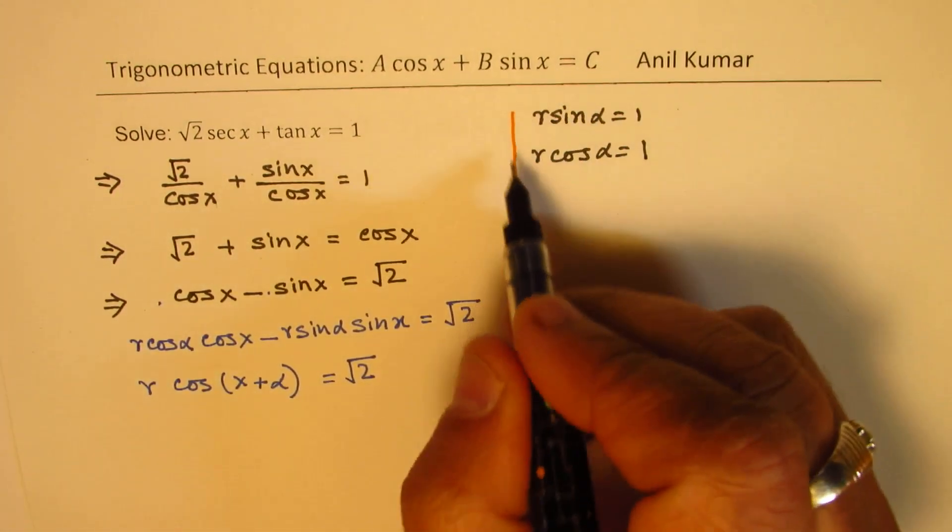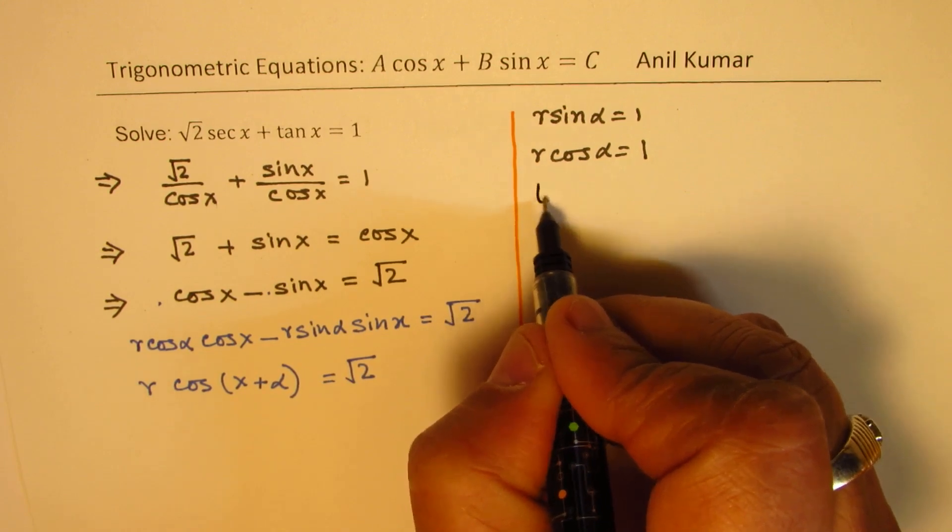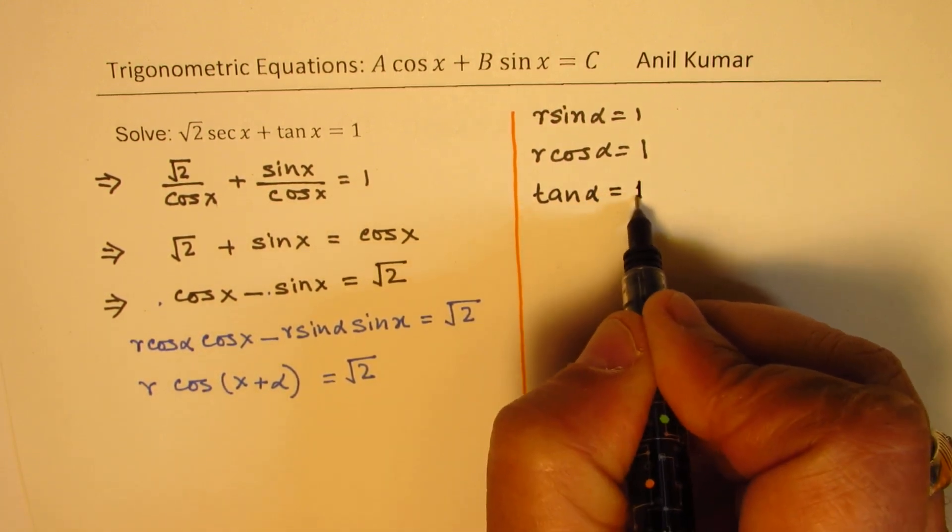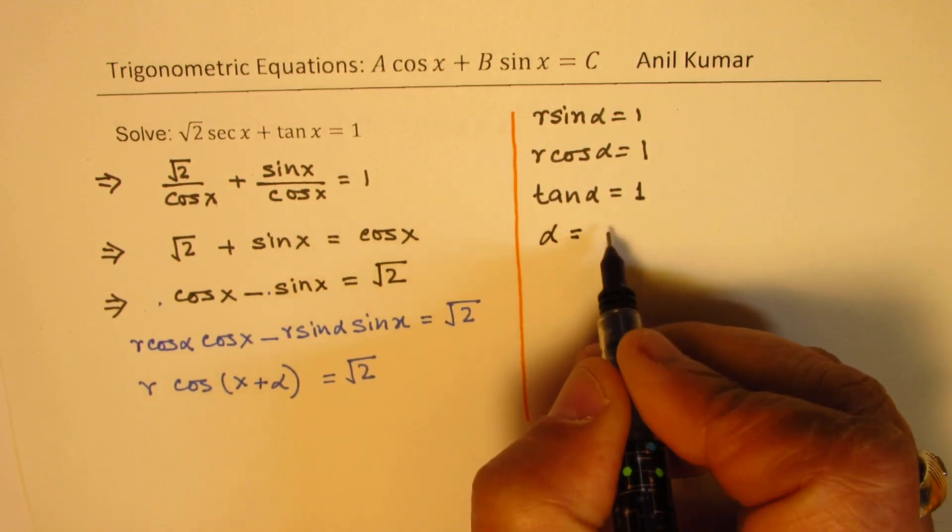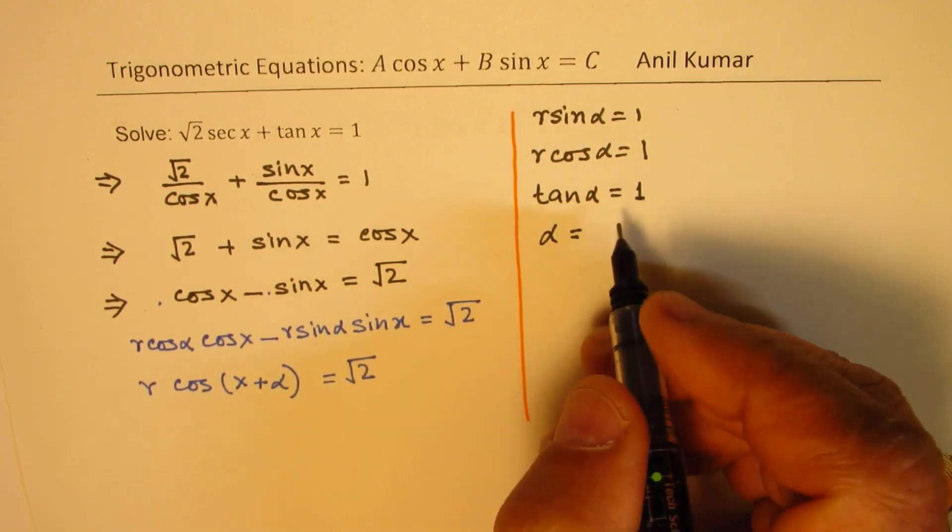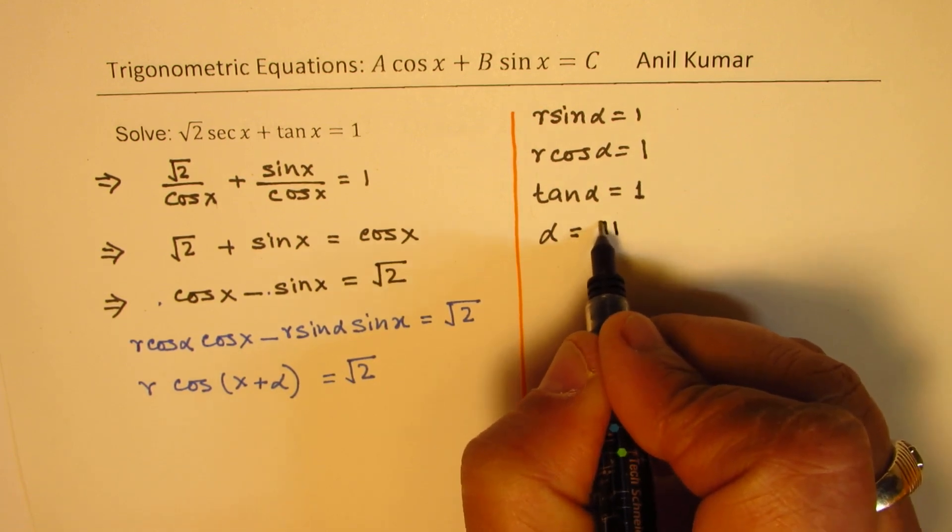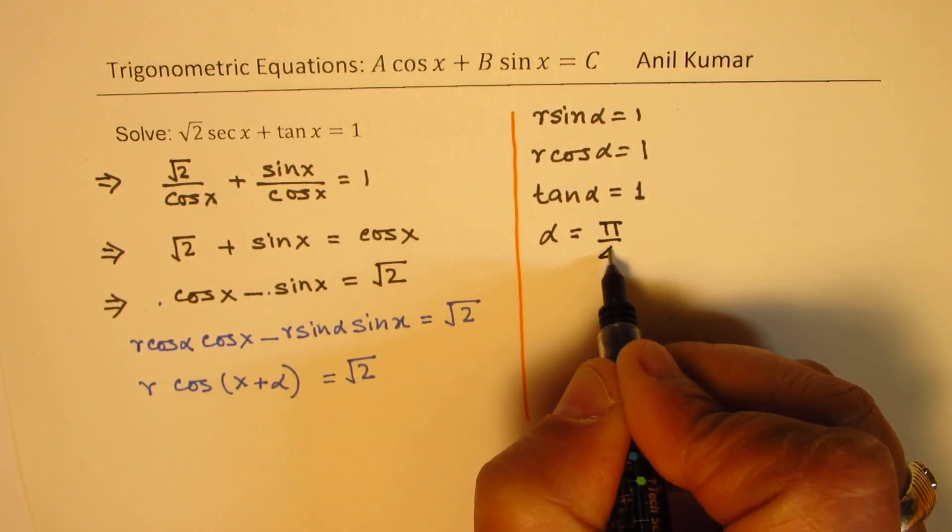Now the ratio of these two will give us tan alpha, which is 1 and that means alpha is equal to pi by 4. So we get this alpha as pi by 4.